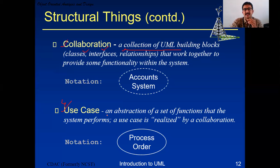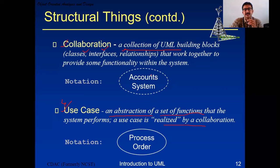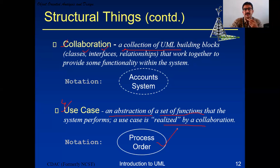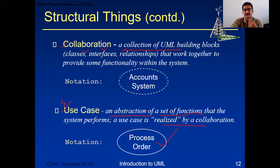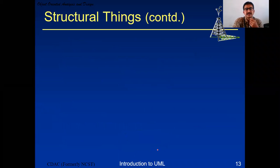The fourth structural thing is use case - an abstraction of a set of functions that the system performs, giving only high-level details. A use case is realized by a collaboration. A collaboration talks about the entire system or a part of the system, but a use case is one function in that system. For example, an account system has a 'process order' function - that is one use case inside that system. The notation for use case is an ellipse.